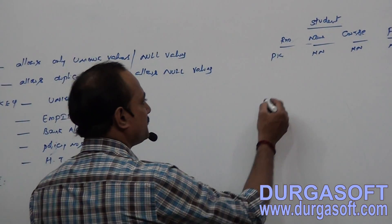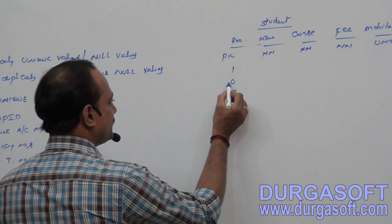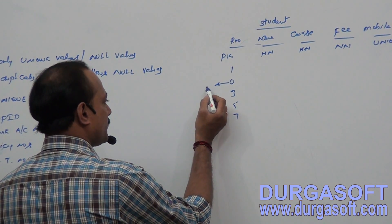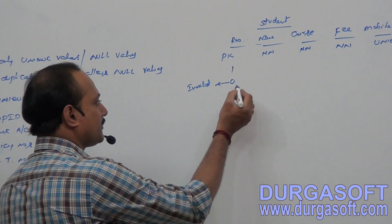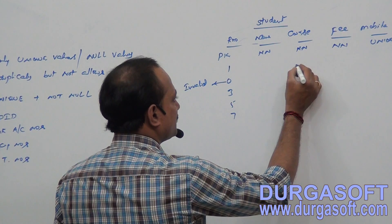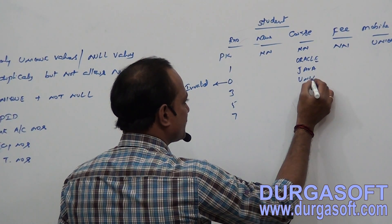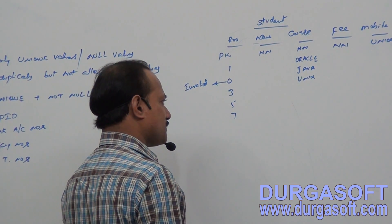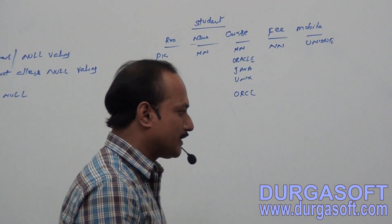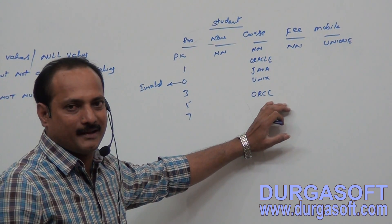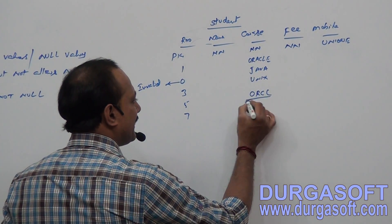According to primary key constraint, if I am taking the values 1, 0, 3, 5, 7 — all are valid. But according to our knowledge, no student has a role number 0; this is invalid. According to courses, if you are using Oracle, Java, and Unix — these are valid. But if you accidentally type ORCL instead of the complete spelling of Oracle, my business does not have any course by that name, so it is not valid — but it still gets inserted into the table.